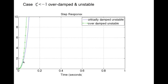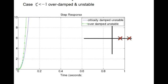This is the overdamped unstable system growing like that. For comparison, I've put the critically damped unstable system right here. The roots are obviously in the right half plane — two distinct real roots.